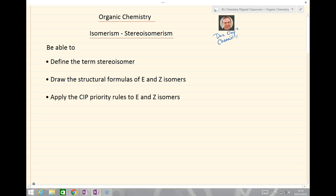So, a final recap, just to say what we've seen here today. You should be able to define the term stereoisomer, draw the structural formulas of the E and Z isomers, and apply the CIP priority rules to E and Z isomers. Those are simply the priorities that we saw before.